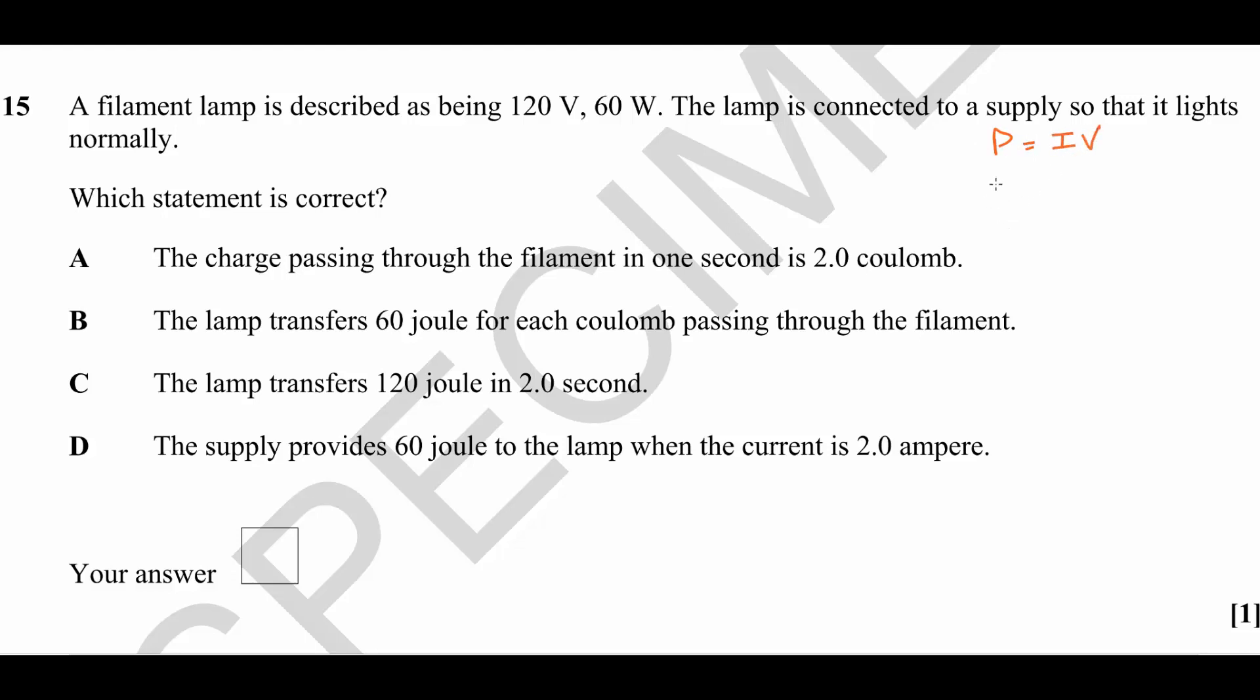So we can rearrange: I equals P divided by V, which is 60 divided by 120, which is 0.5 amperes or 0.5 coulombs per second. Either way, statement A is incorrect because it says two coulombs.